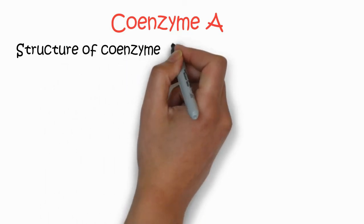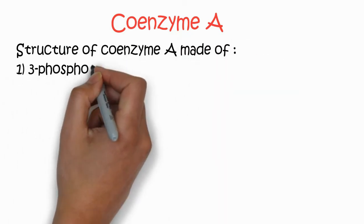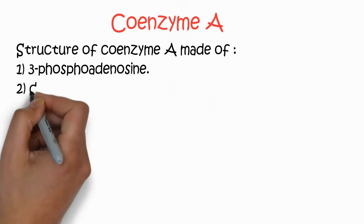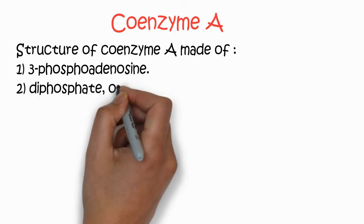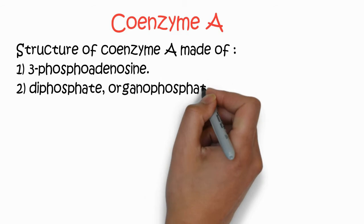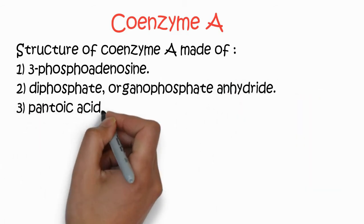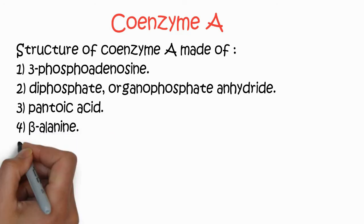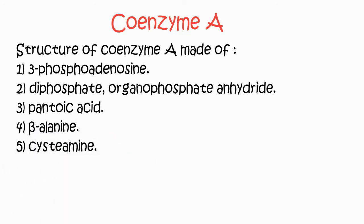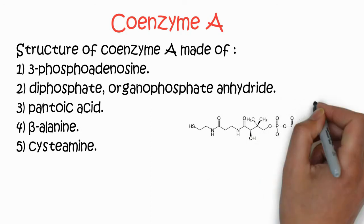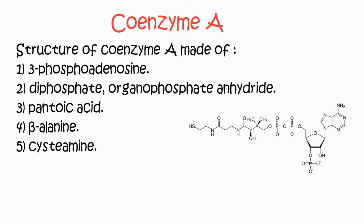First example of coenzymes is coenzyme A. The structure of coenzyme A is made of 3-phospho adenosine diphosphate, pantothenic acid, beta-alanine, and cysteamine. These are the five components of the coenzyme structure.